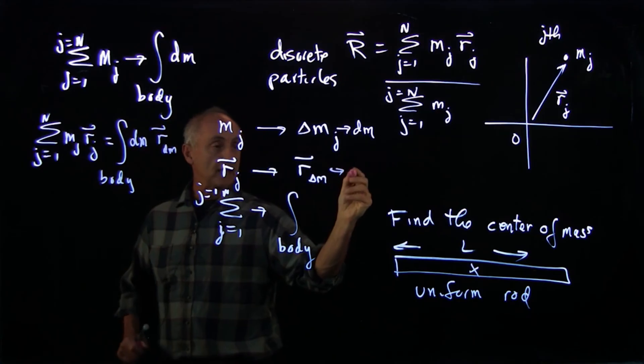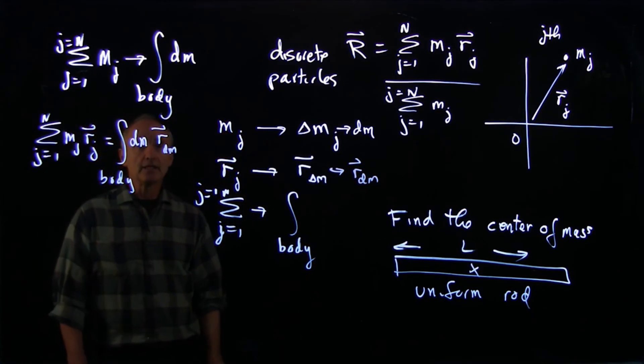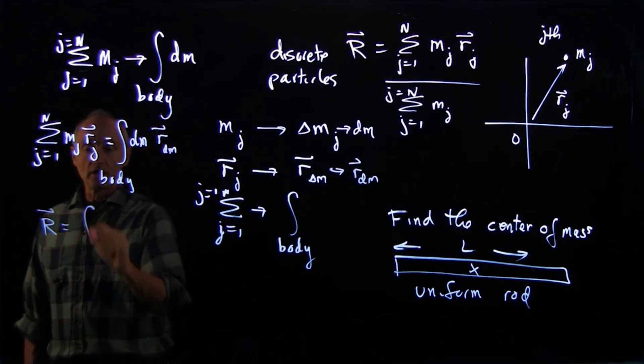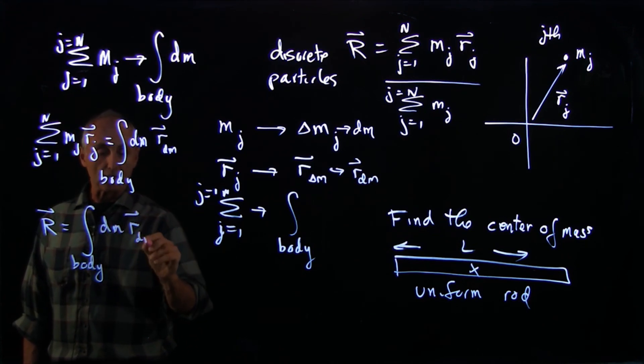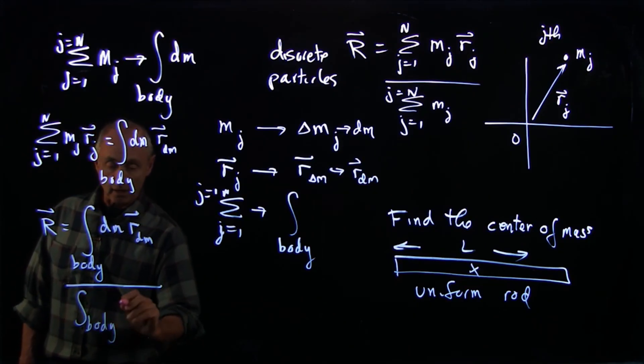We can say in the limit that this becomes r going to that element. That means that our continuous expression for the continuous object is an integral over the body of dm r to that element dm, divided by an integral over the body of dm.